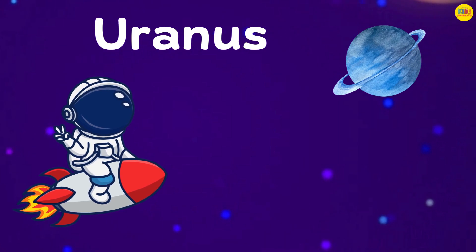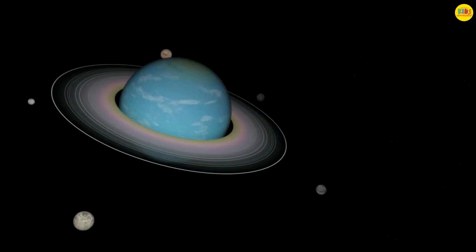Here comes a twist. It's Uranus. Uranus spins on its side, which makes it unique. It's also a very cold and windy planet. I think I need a warmer space suit.